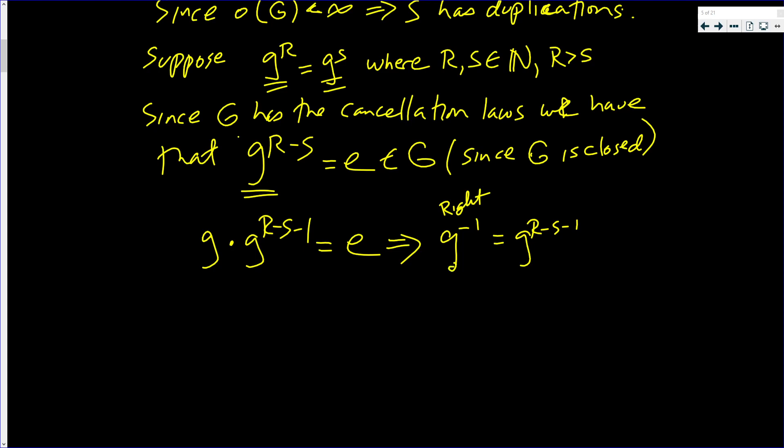And also, I can break off a g on the right side. There it is right here. And this is still e. That implies that g inverse, left inverse, is also g to the R minus S minus 1. It's good that they're both equal because inverses are supposed to be unique.